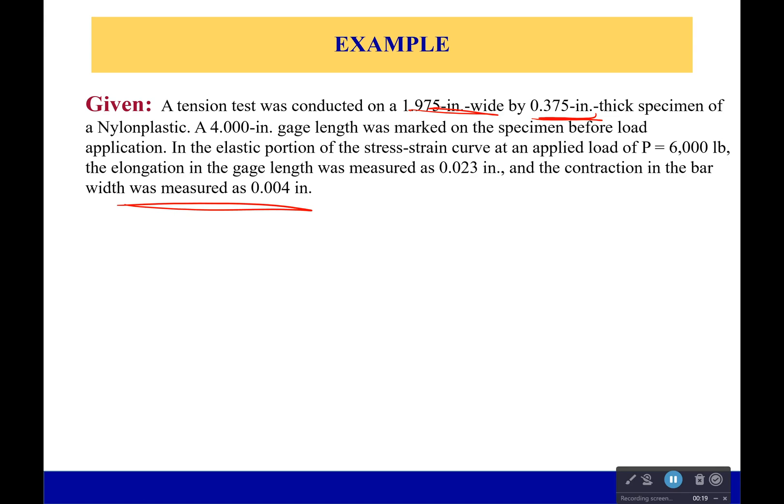A 4 inch gauge length was marked on the specimen before load. In the elastic portion of the stress-strain curve at an applied load of P equals 6,000 pounds, the elongation was 0.023 inches, and the contraction of the bar width was measured at 0.004 inches.